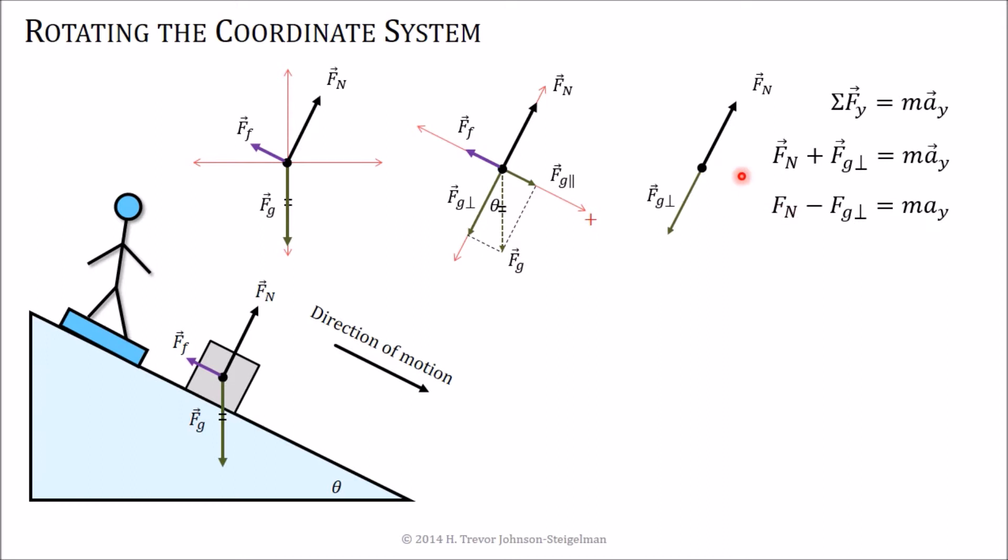And the normal force is in the positive direction. The gravitational component is in the downward direction. But again, the net force in this direction is equal to zero because we're not floating up off of or sinking down into the inclined plane that we're looking at. So, in this case, the normal force and the perpendicular component of the force of gravity are equal to each other.